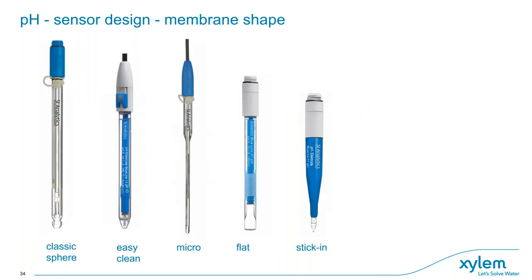Regarding membrane shape: the classical sphere from a glassblower has a large surface area, which is an advantage. Flatter, more modern shapes are easier to clean and still provide normal measurements. Micro electrodes are used for low-volume samples, for example measuring small amounts of blood. Flat membrane electrodes can measure on surfaces such as skin.